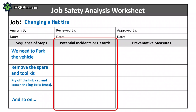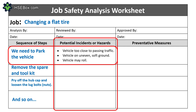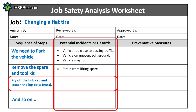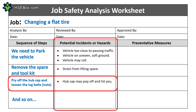These potential hazards are listed in the middle column of the worksheet, numbered to match the corresponding job step. For parking the vehicle, we can identify hazards such as: vehicle too close to passing traffic, vehicle on uneven or soft ground, and vehicle may roll. To remove the spare and tool kit, consider: strain from lifting the spare. To pry off the hubcap and loosen lug bolts: hubcap may pop off and hit you, and lug wrench may slip. Remember that all participants should jointly review this part of the analysis.